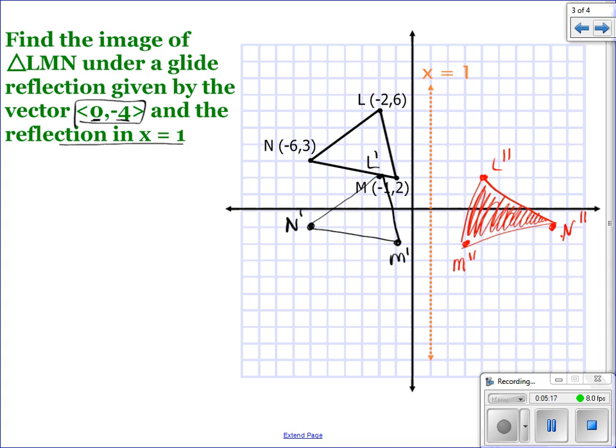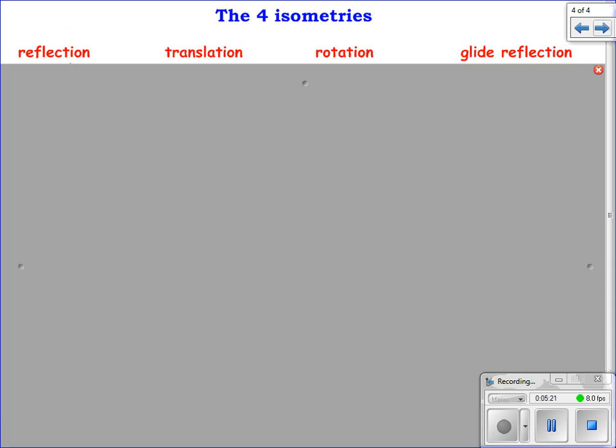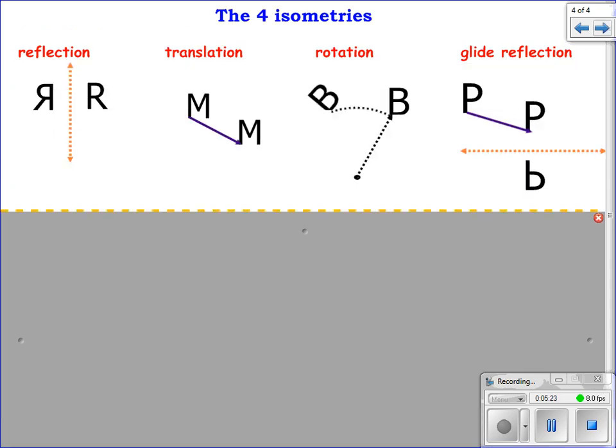So just a really quick summary of the ones that we have learned so far would be reflection, translation or slide, rotation, and then this new one, which isn't really new, it's just two put together, a glide reflection.